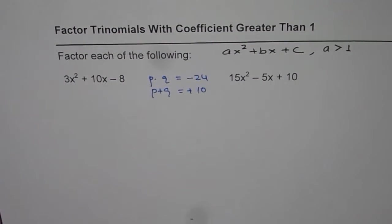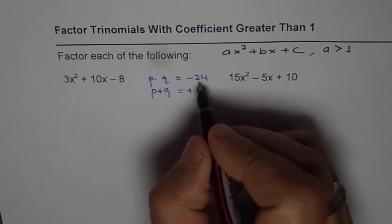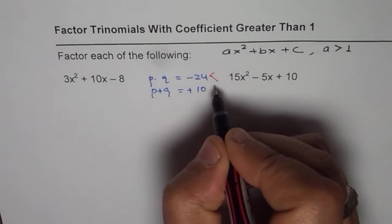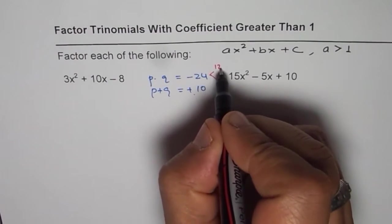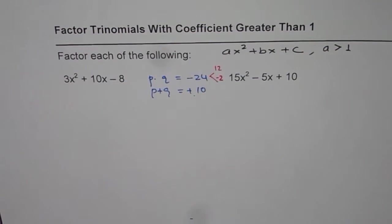So the two numbers which could do this magic for us are 12 times 2. One of them has to be negative, the other one positive. Positive number is bigger. So 12 times -2 works for us.